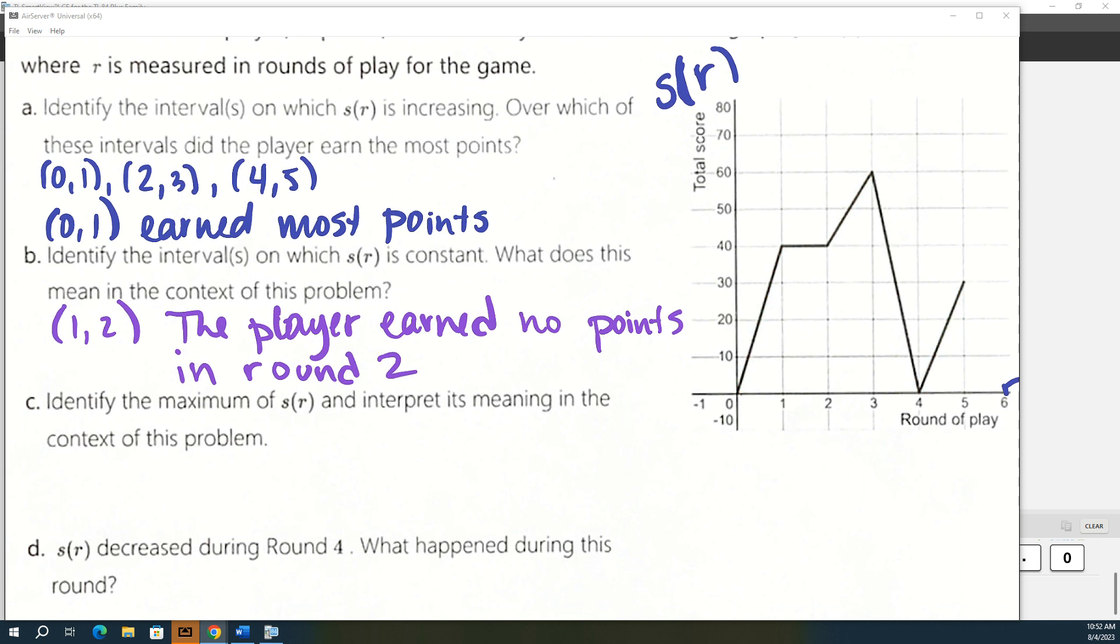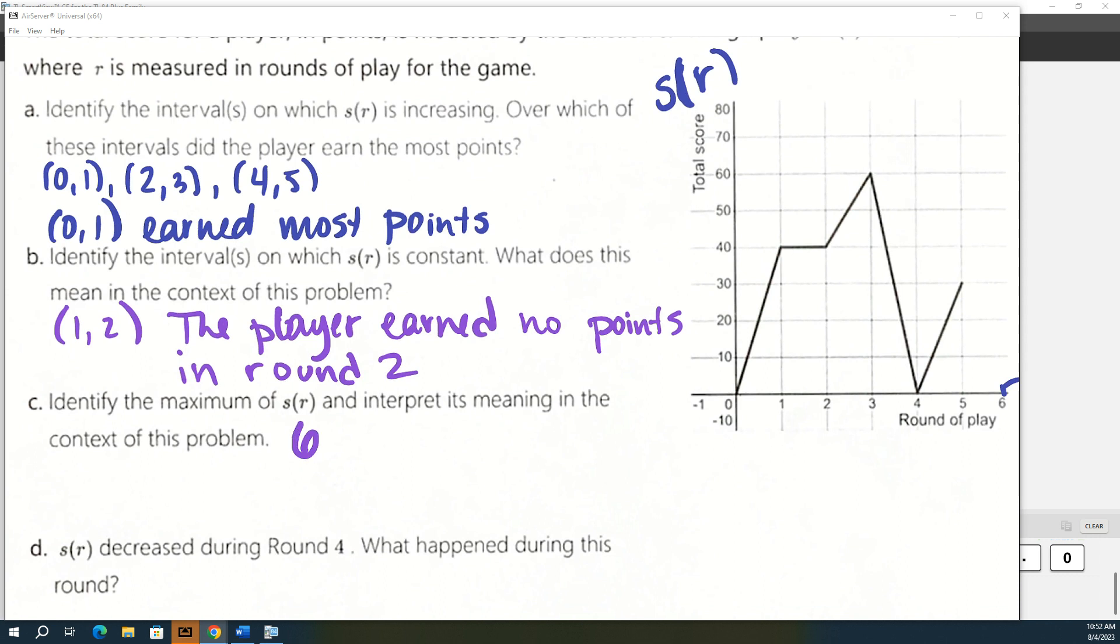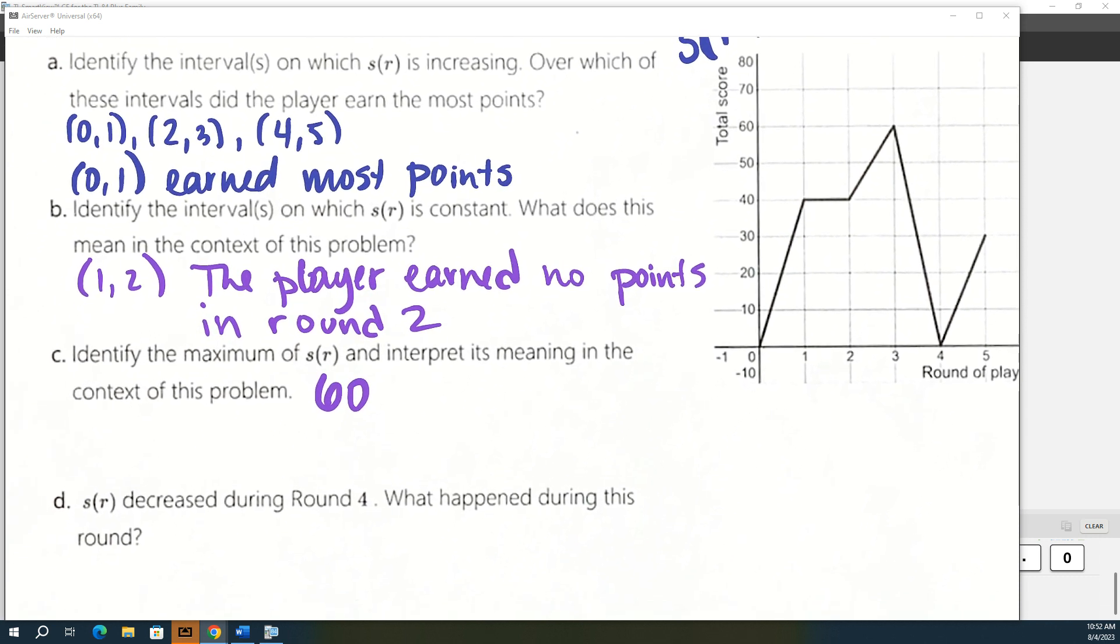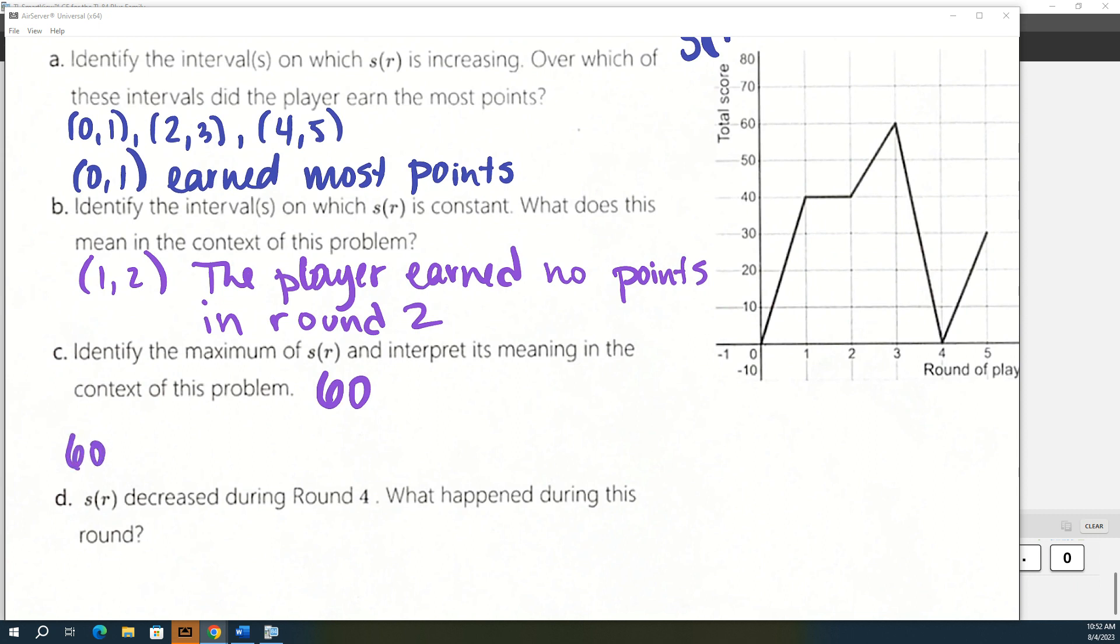Identify the maximum of S of R, interpret what it means. So on this maximum, we are only going to use the S of R score. So I know, and I'll tell you a lot of times, you give a maximum minimum as an ordered pair. It's not technically what this one is asking. It's asking, what is the largest value of the function? So what is the largest value of the function? It's 60. And what does that mean? That's the most points. 60 points is this player's highest score.